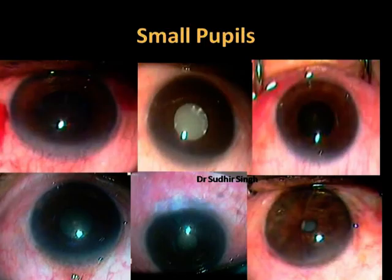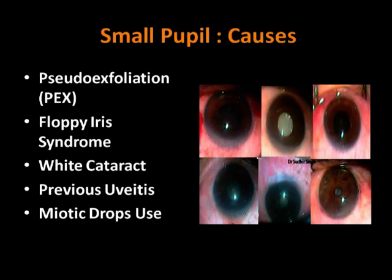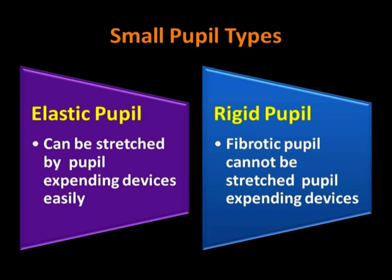Small pupils can be defined as all cases with less than six millimeters pupillary dilation, termed as small pupils or non-dilating pupils. The main causes of small pupils are as follows: pseudoexfoliation syndrome, floppy iris syndrome, white cataracts, previous uveitis, and long-term use of miotic drops.